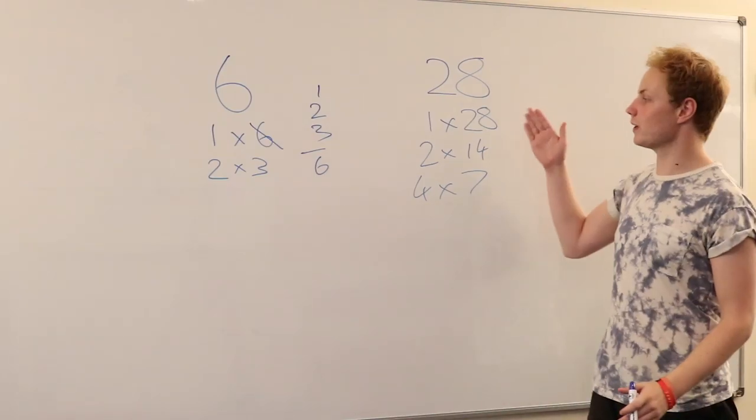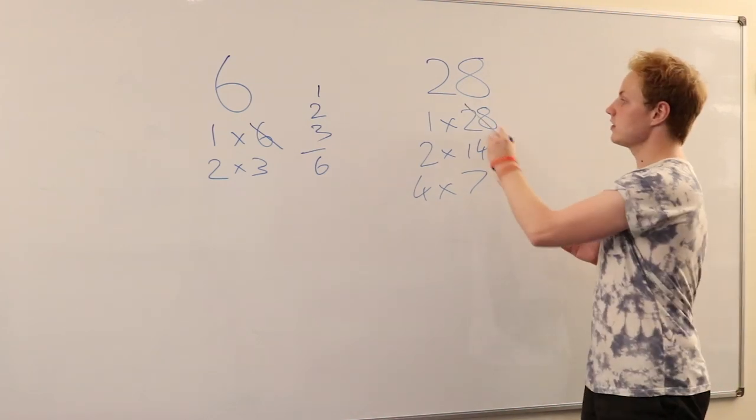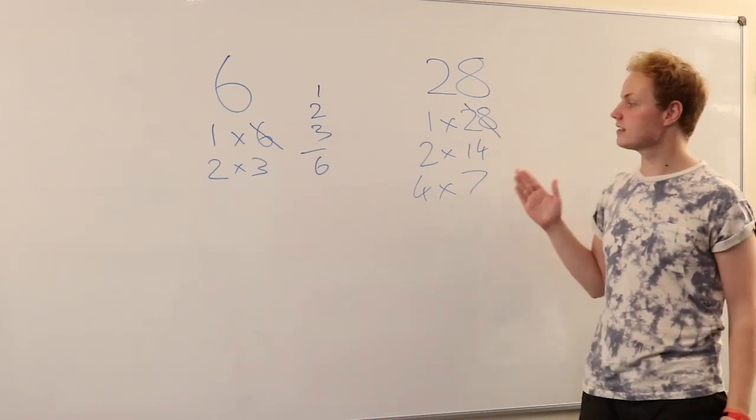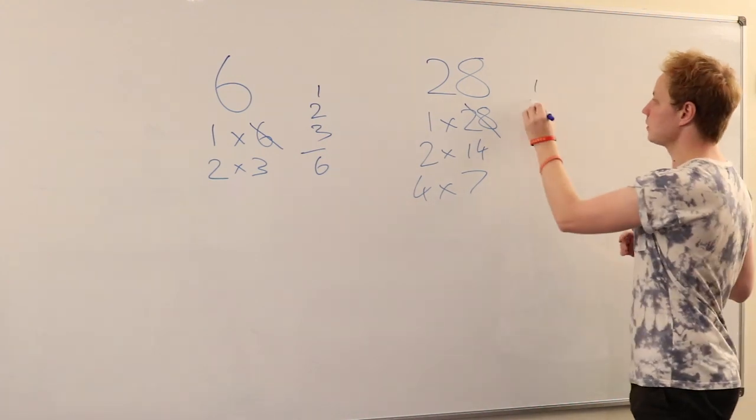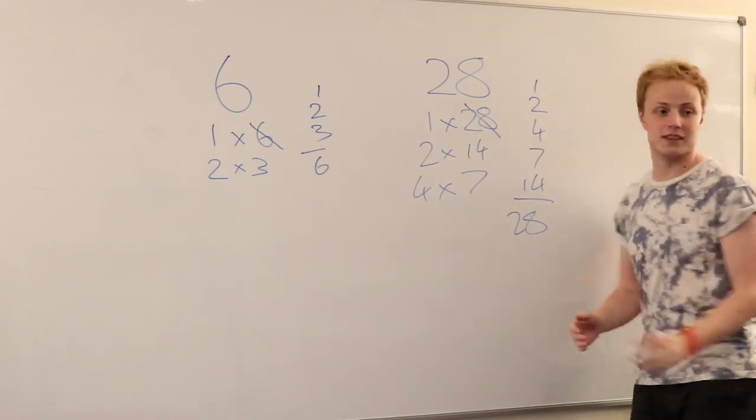Let's have a look at our next perfect number, which is 28. Again, it's to do with the proper divisors of 28. So that's one, two, four, seven, and 14. Add these all together. And hey, presto, what do you get? 28 again.